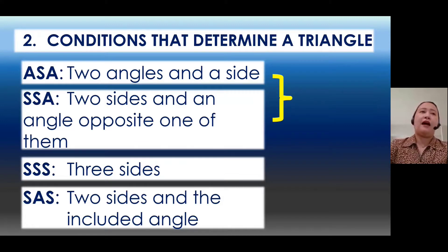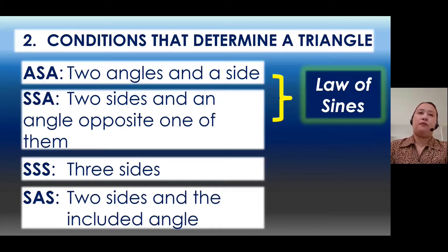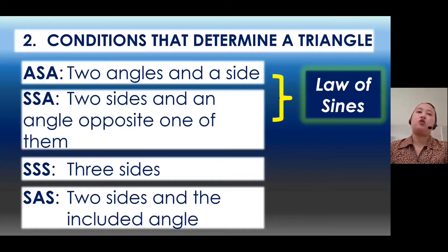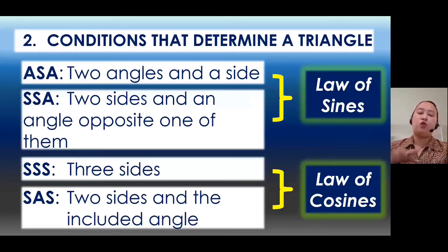For ASA and SSA cases, we use the law of sines. For SSS and SAS cases — three sides given, or two sides and the included angle — we use the law of cosines. These are the two methods for solving oblique triangles depending on what is given.